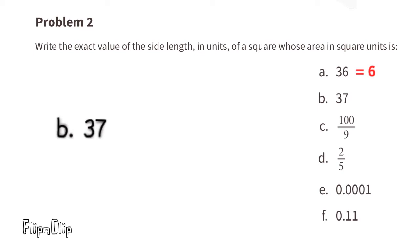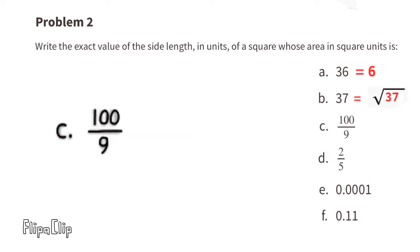So we need to find the exact value of the side length for an area of 37. The exact value of the side length would be the square root of 37. Part C: area is 100 over 9.